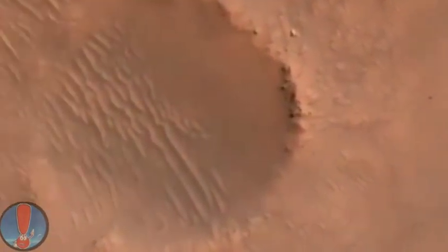We have confirmation that the back shell has separated. Current velocity is about 75 meters per second at an altitude of about a kilometer off the surface of Mars.